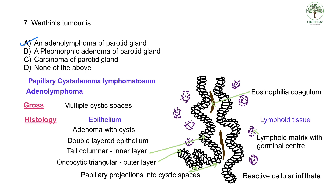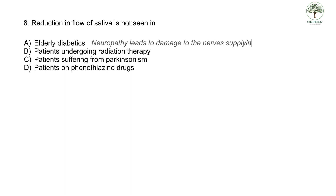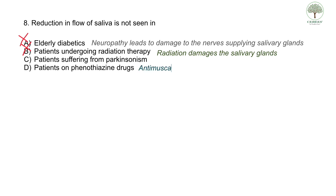The eighth question: reduction in flow of saliva is NOT seen in — options are: A) elderly diabetics (where reduction is seen due to neuropathy), B) patients undergoing radiation therapy (where salivary gland is damaged), C) patients suffering from Parkinsonism, D) patients on phenothiazine drugs (antipsychotic drugs with anti-muscarinic effect that decrease acetylcholine secretion causing dryness of mouth). The correct answer is C — patients suffering from Parkinsonism.